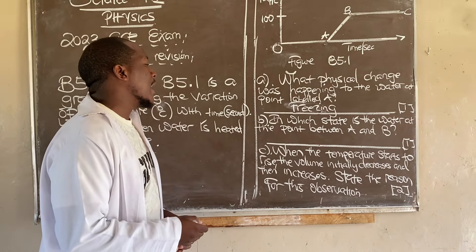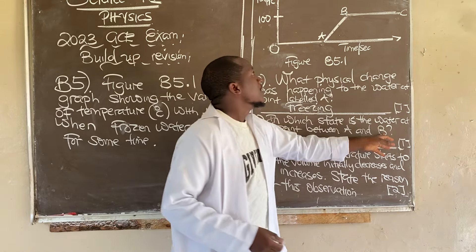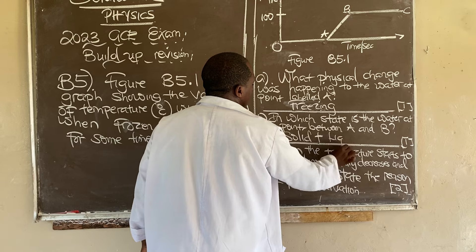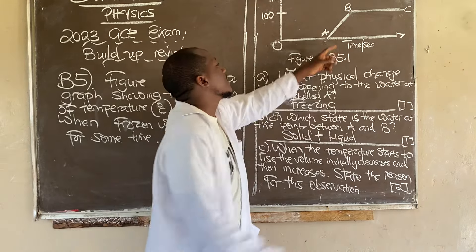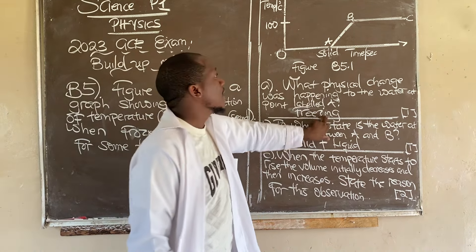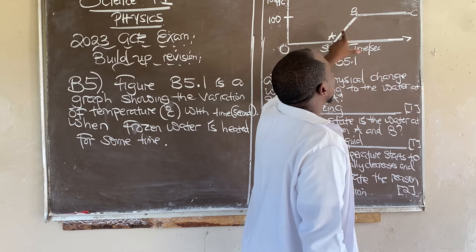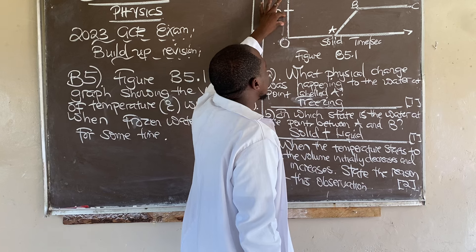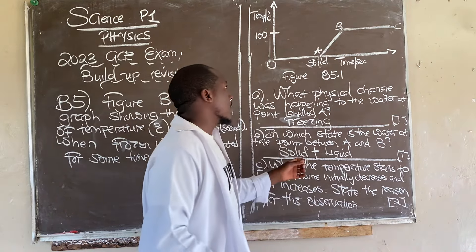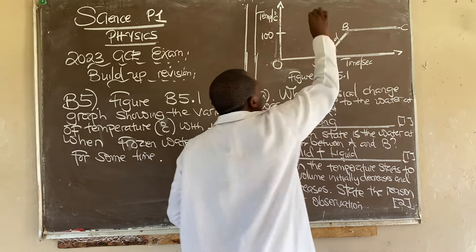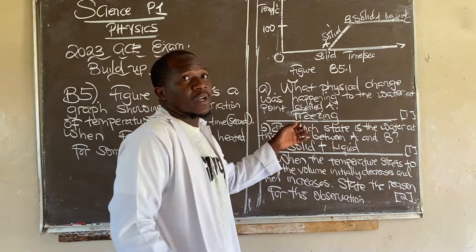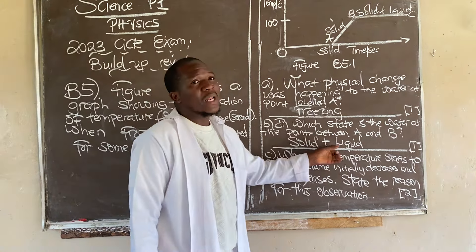The next question asks: in which state is the water at the point between A and B? Between A and B, it is going to be solid plus liquid. Why solid plus liquid? Because at point A it is solid — it is frozen. As the line slopes upwards toward B, the temperature is increasing, meaning a change of state is beginning. So between A and B we have both solid and liquid present — the answer is solid plus liquid.